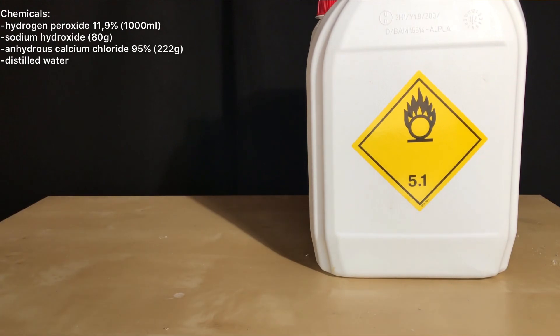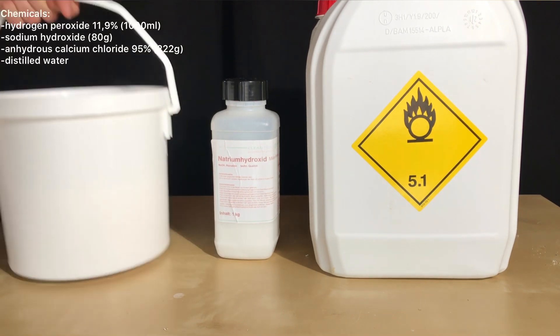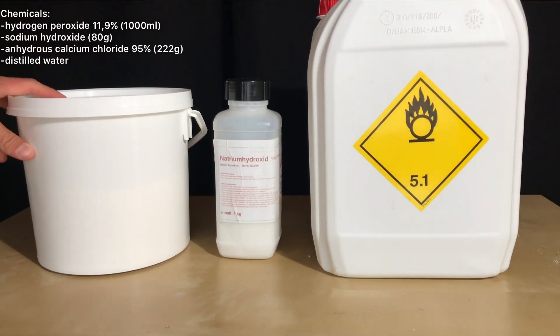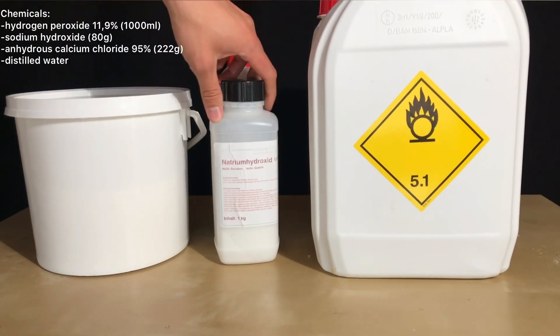For this, we are going to use 1 liter of 11.9% hydrogen peroxide, which is a huge overkill, 80 grams of sodium hydroxide, 222 grams of 95% anhydrous calcium chloride and, of course, distilled water.